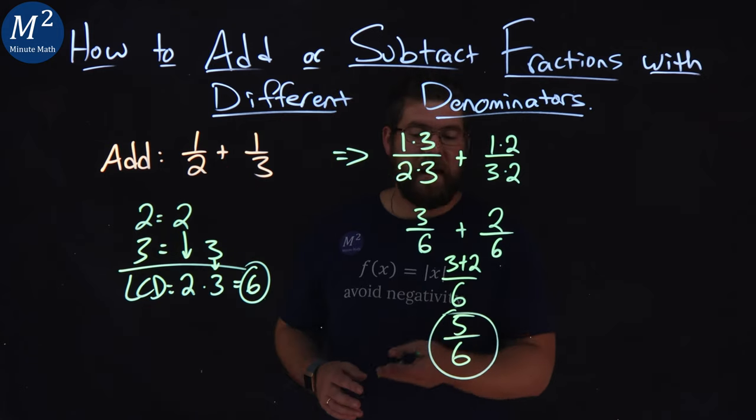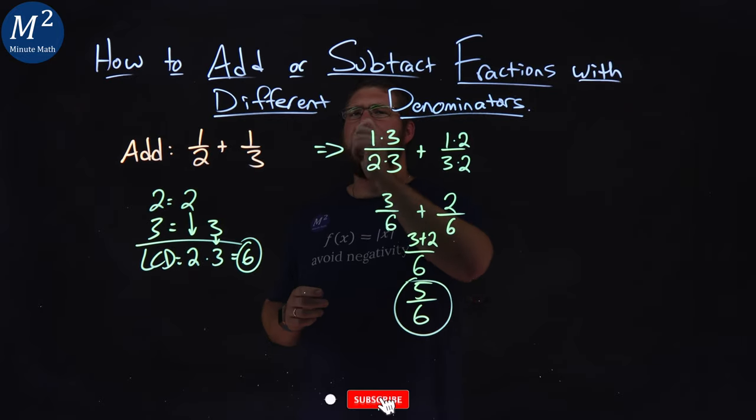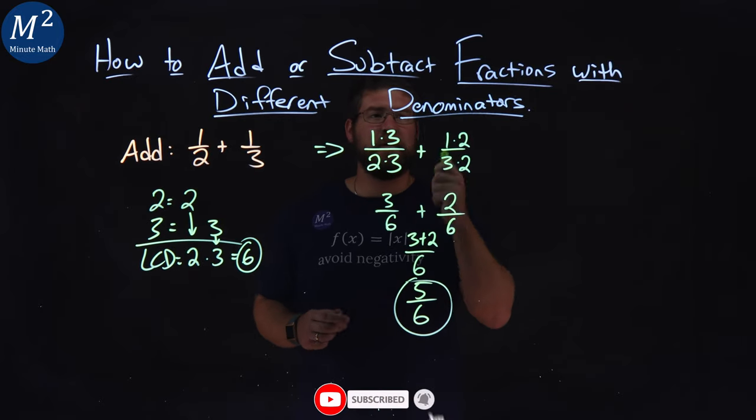1 half plus 1 third comes out to be 5 sixths. I hope you learned something here on how to add or subtract fractions with different denominators.